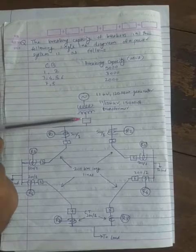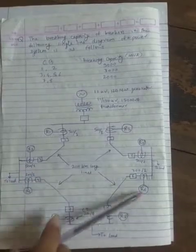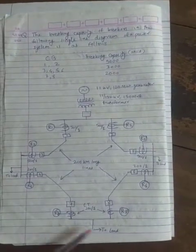This is the circuit breaker and this is the circuit. Relay 1, Relay 2, Relay 3, Relay 4, Relay 5, Relay 6, Relay 7, Relay 8. The loads are here, here and here.